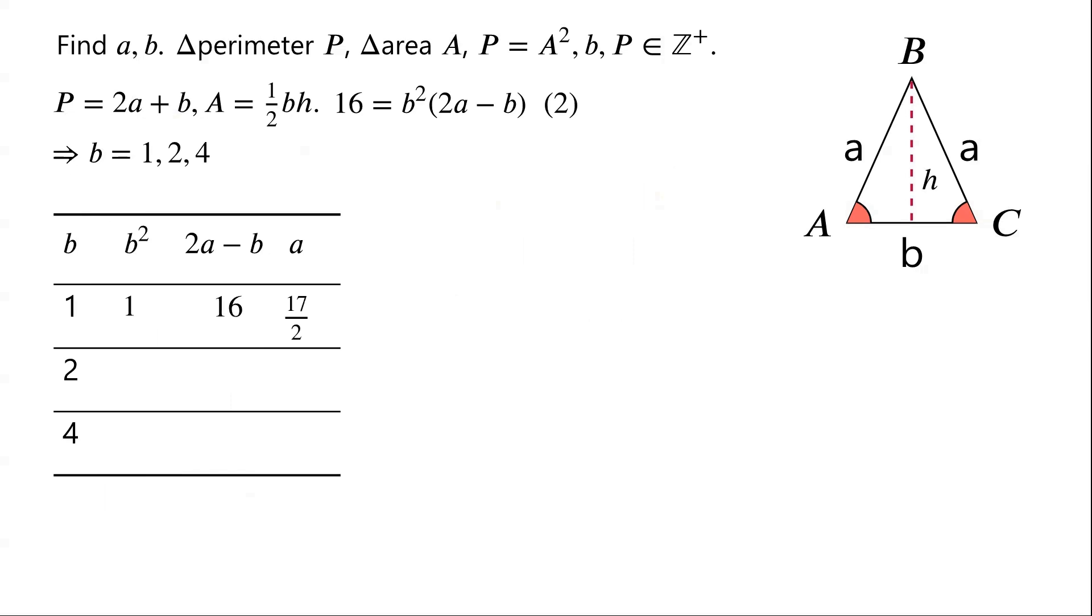For B equals 2, B squared is 4. 2A minus B equals 4. So A equals 4 plus 2 over 2, which is 3.